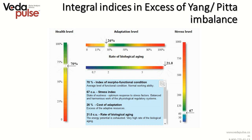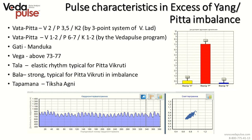Integral indices in the axis of Yang: here we check four indices including index of morphofunctional state and functional indicators of cardiointervalogram values. The index of morphofunctional state shows that people have sufficient life force located in the lower border of high functionality or upper border of medium functionality. Stress level is near 60 conventional units, meaning resistance to stress is quite strong. Adaptation price is just below 30%, and the speed of biological aging would always be in a red zone. Pulse characteristics show the classical features of Manduka Gati pulse — Manduka means frog and Gati means jumping movement.